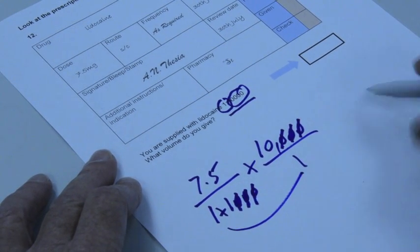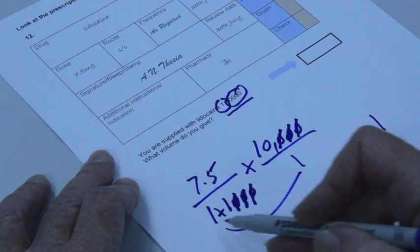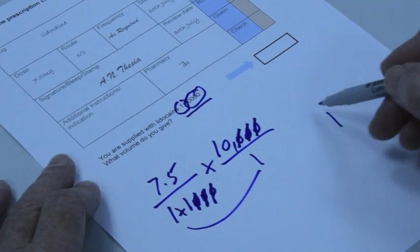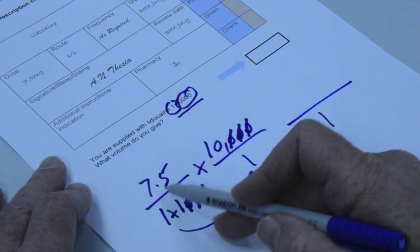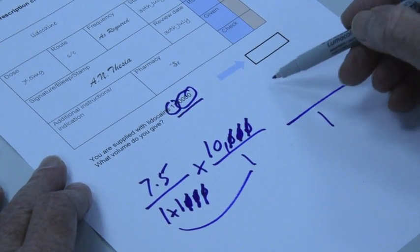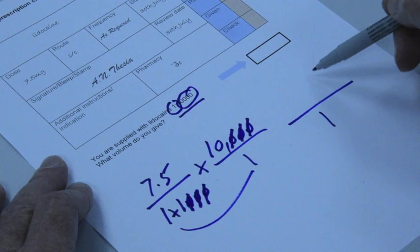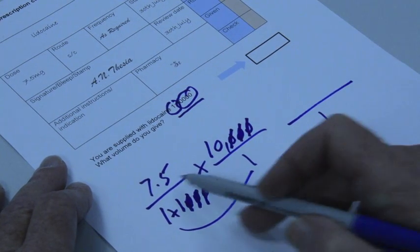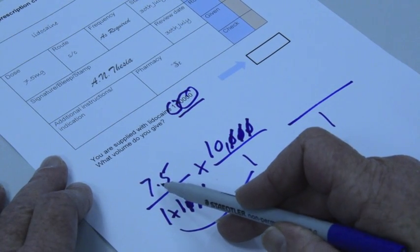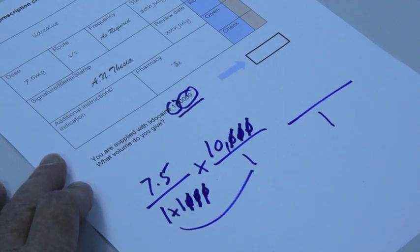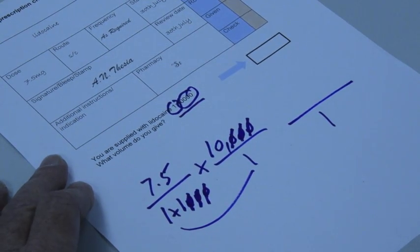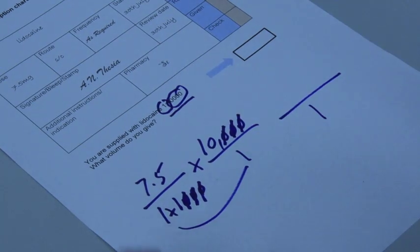Alright, so on the bottom we've got one times one times one is one, and on the top we've got ten times seven point five. You can set that out as 7.5 times 10 if you like, or you might know that if you're multiplying a decimal figure by ten, all you need to do is move the decimal point to the right.